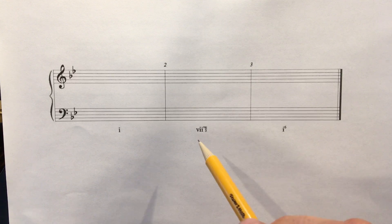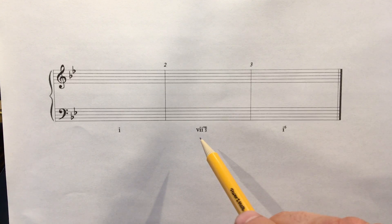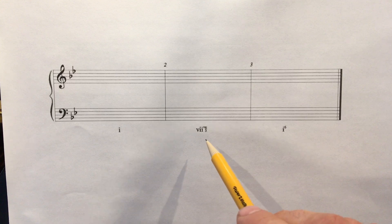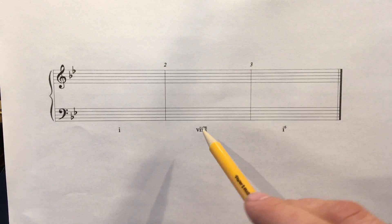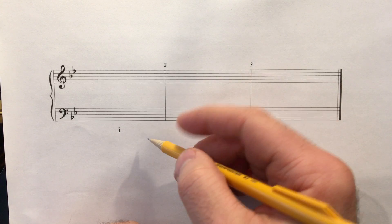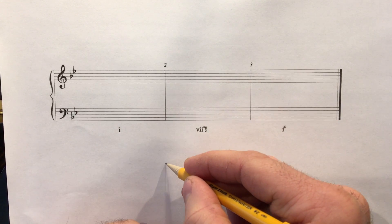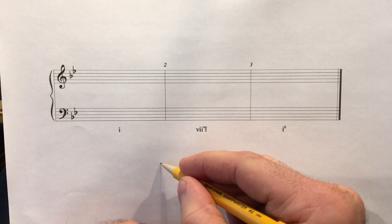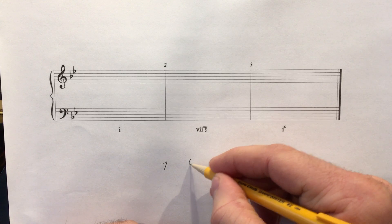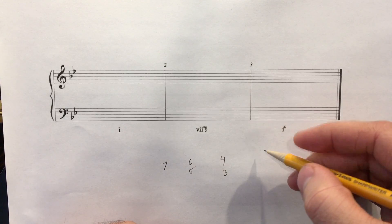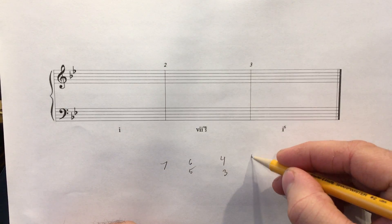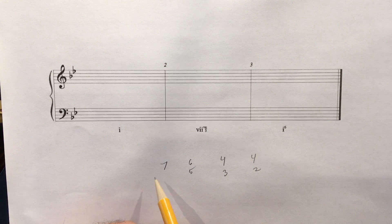In this case, we're presenting the leading tone diminished 7th chord in inversion in 6-5 position, which is 1st inversion. Remember that your inversions are: root position is 7, then 6-5, then 4-3, and then 4-2. These are all your inversions of a 7th chord.